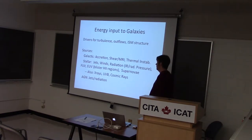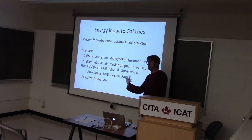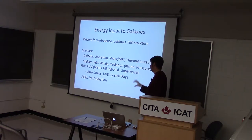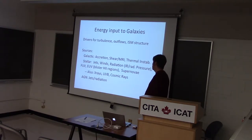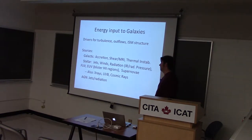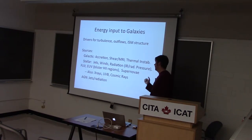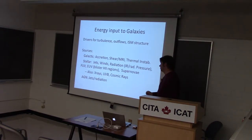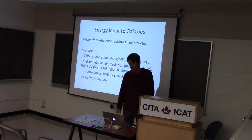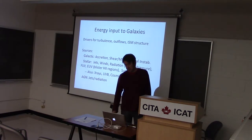We have a lot of sources available: galactic accretion, shear or MRI, things related to the rotational nature of the galaxy, and thermal instability — those are one class of drivers. Another one is stellar sources which could be jets, winds, radiation which could be infrared radiation pressure, FUV onto dust grains, EUV which is classical HII regions, and supernovae. We also have X-rays, cosmic UV, cosmic rays, and in principle jets and radiation from AGN.